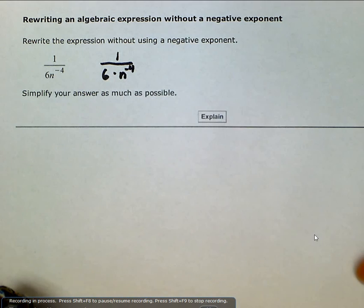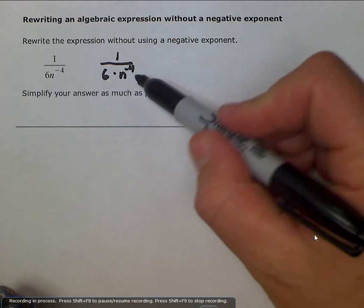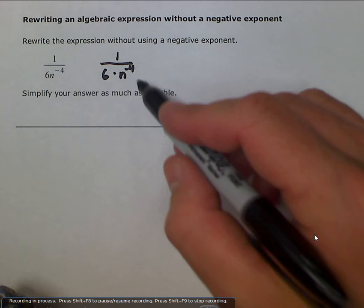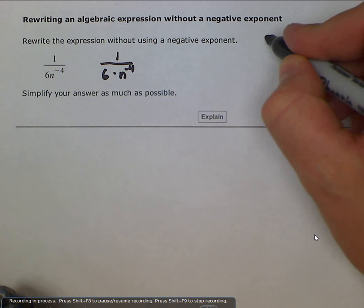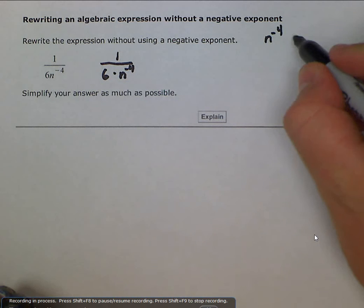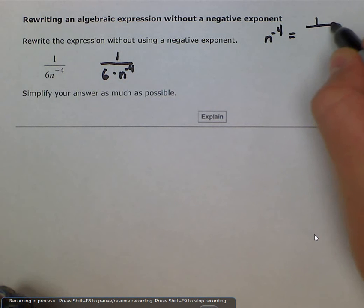And now all we need to do is remember what it means to have a negative exponent and how to rewrite it without the negative exponent. n to the negative 4 can be rewritten without the negative exponent as 1 divided by n raised to the 4th, and that negative goes away.